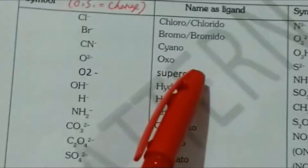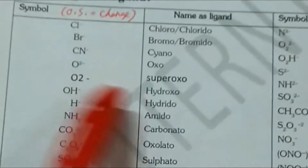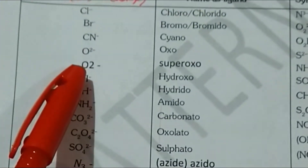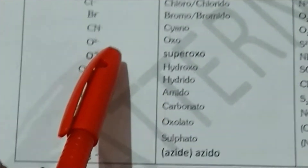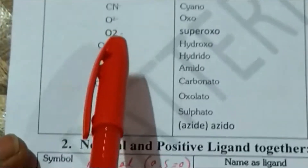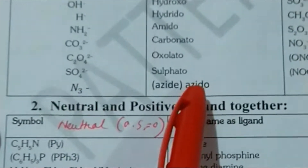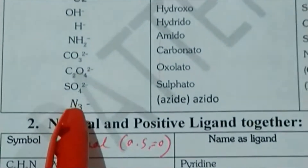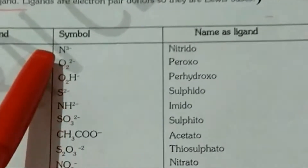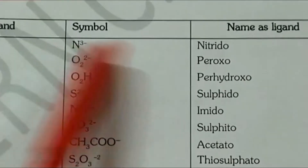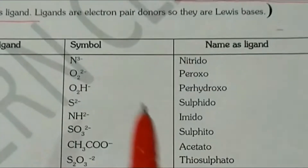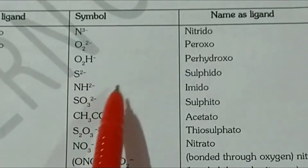Similarly, Br⁻ is bromo or bromido. O²⁻ is oxo. O₂⁻ is superoxo — note that this is O₂, a molecule with only one negative charge. Like that we have N₃⁻ which is azido — three nitrogen atoms and one negative charge. Then N³⁻ — only one nitrogen atom and three negative charges — that is nitrido. Like that we have lots of negative ligands.